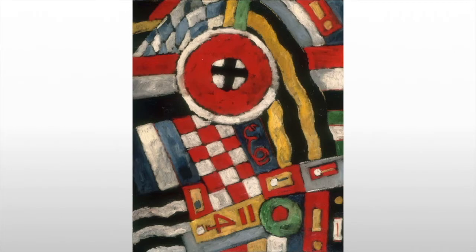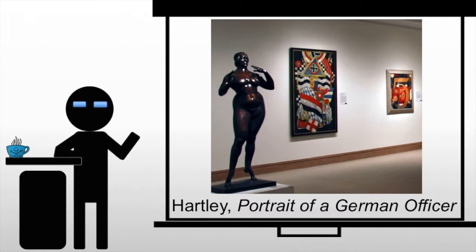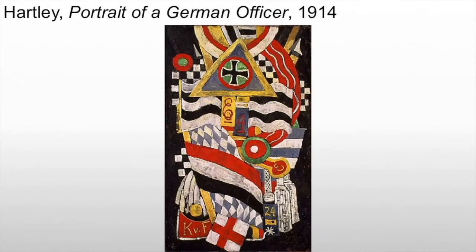Looking more closely at Portrait of a German Officer: this depicts military honors, although these have a personal significance to Hartley. It actually refers to Hartley's lover at the time. His age at death and his regiment are both going to appear in the image.